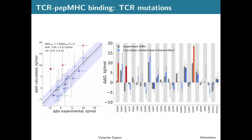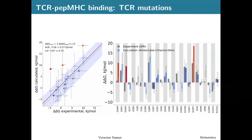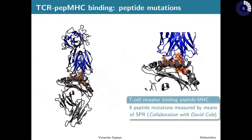On the left, the x-axis shows the experimental delta-delta-G and the y-axis the calculated value — we can indeed capture the effect of protein-protein interaction and mutation-induced free energy changes. On the right, the same data is shown as a bar plot. Only three columns are marked in red, showing slightly off values — slight inaccuracies — but these are only three out of almost 30 data points.